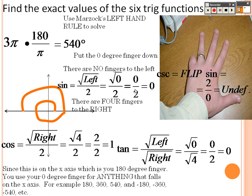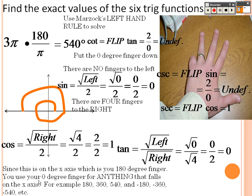Flipping the reciprocals for 3π: flip 0 over 2 to get cosecant as 2 over 0 — undefined. Flip cosine to get secant — but cosine is negative 1 here, so secant is also negative 1. Cotangent: flip tangent, giving 2 over 0 — undefined because you can't have 0 on the bottom.